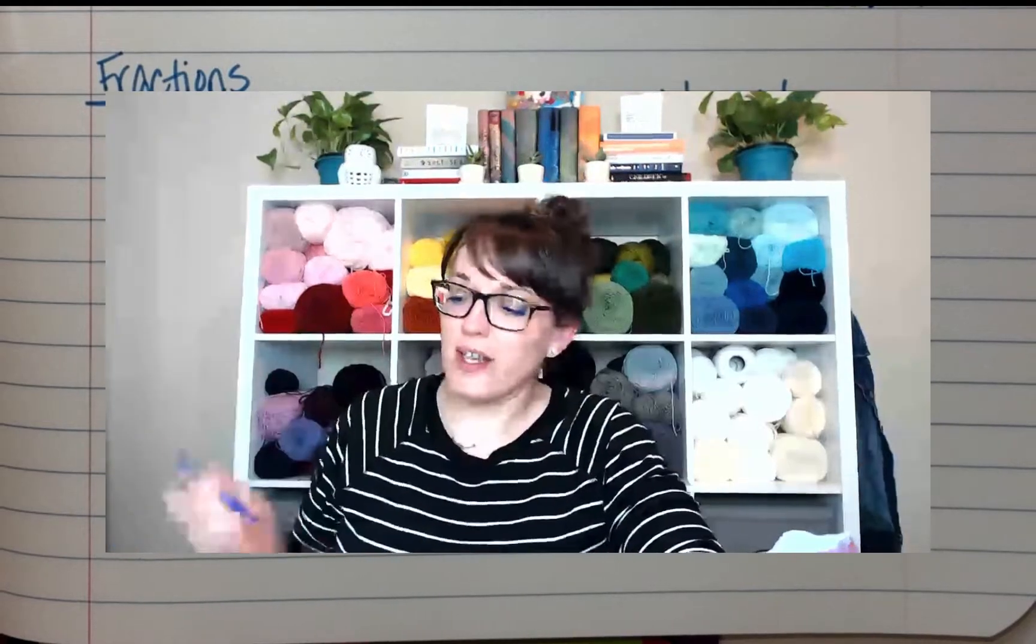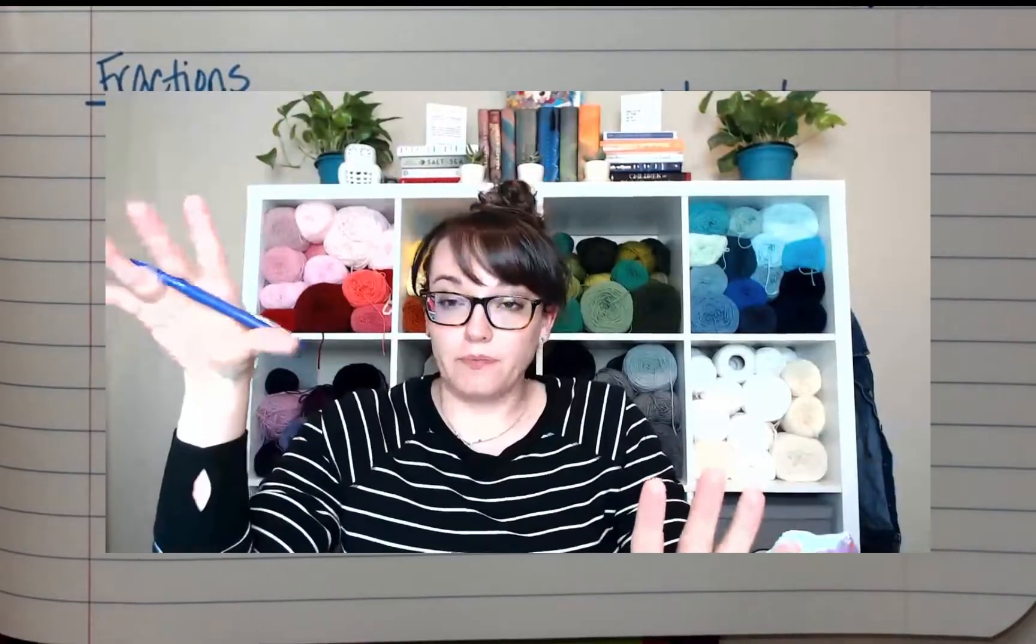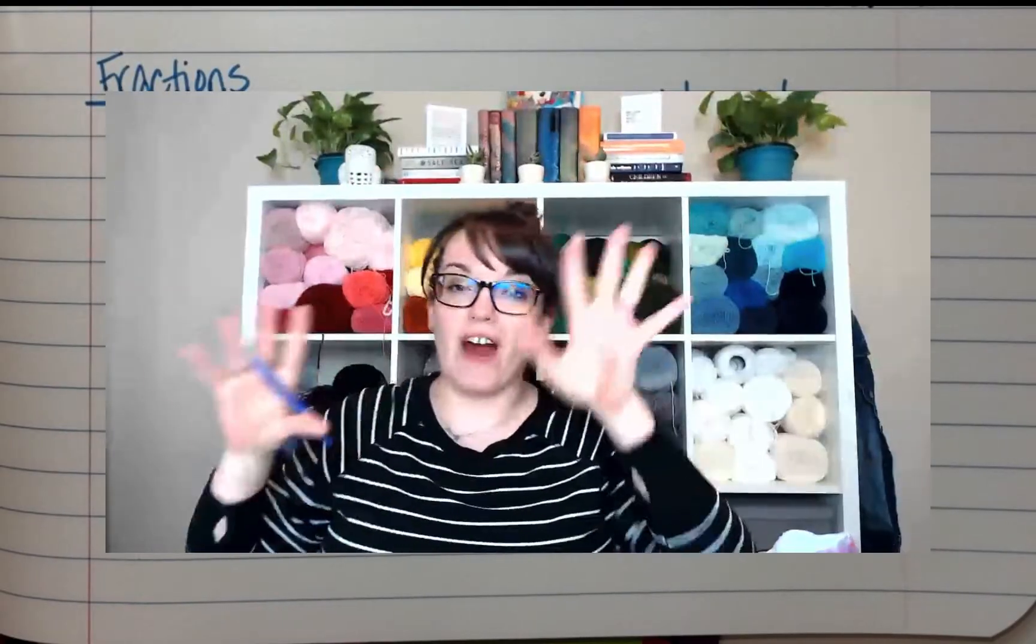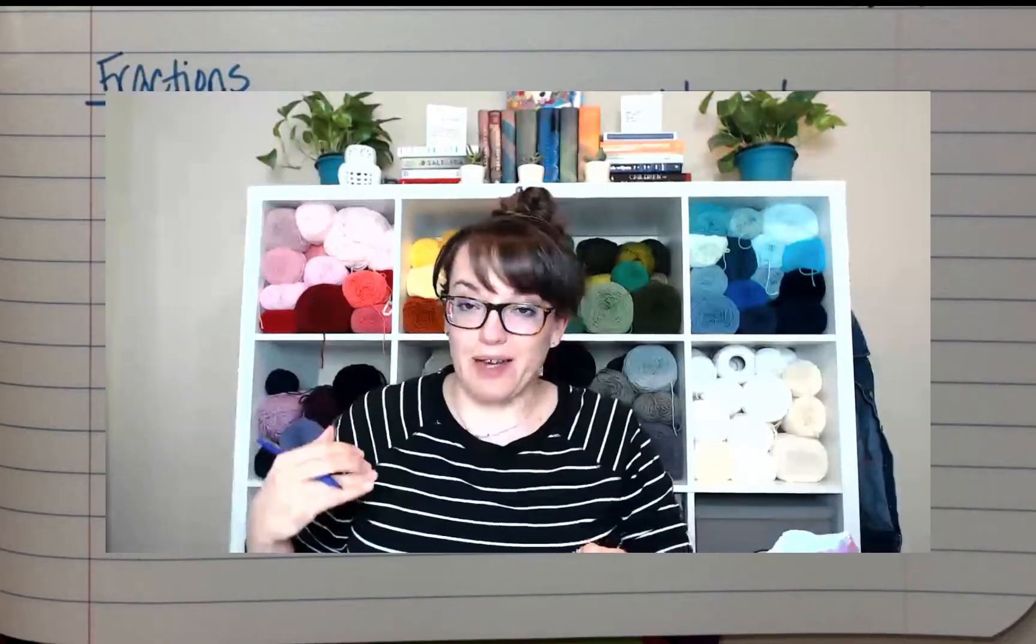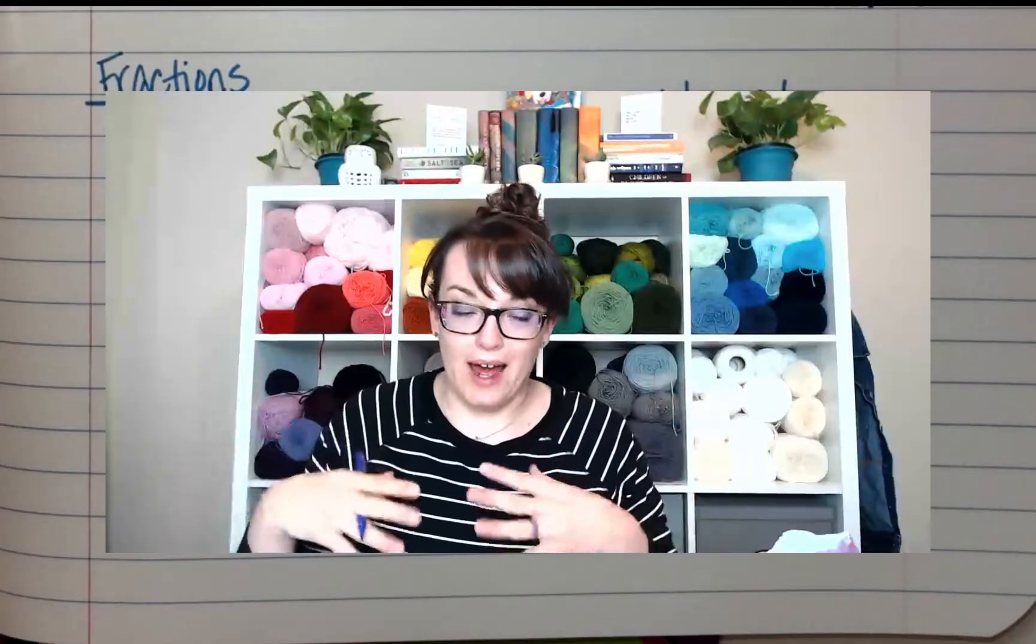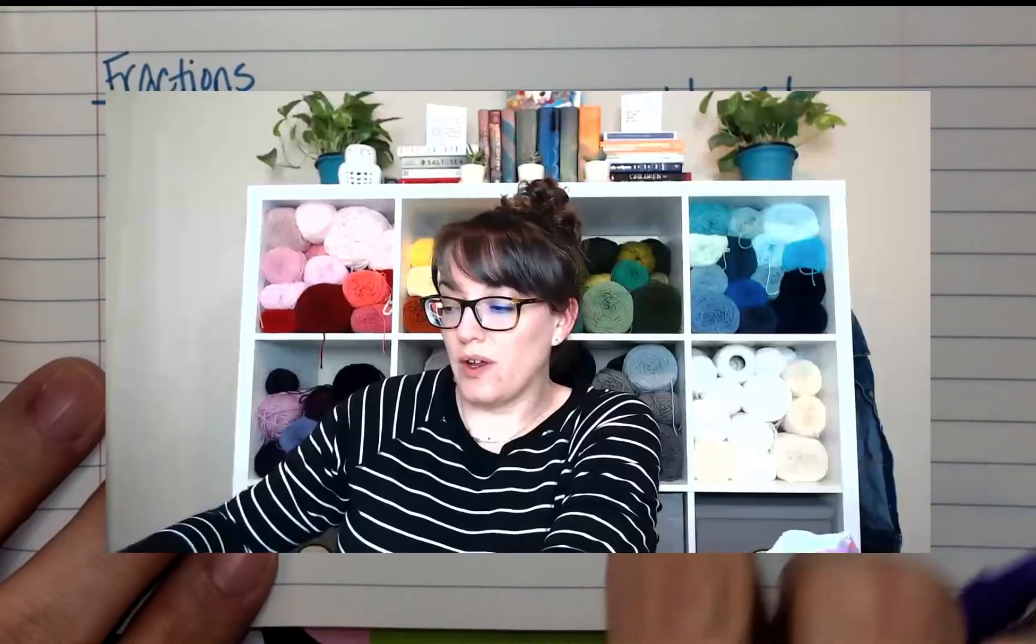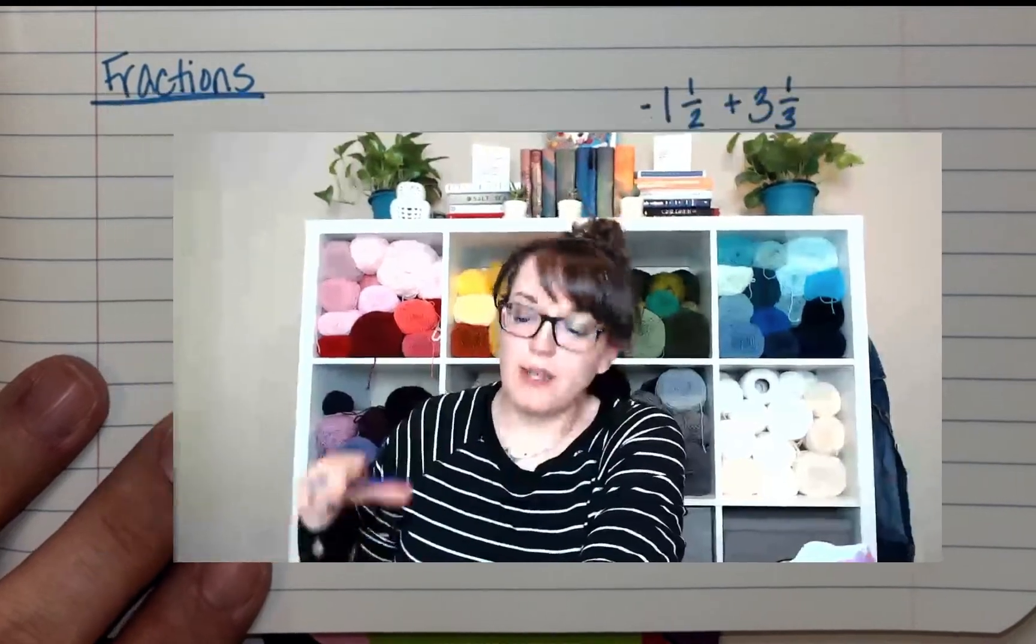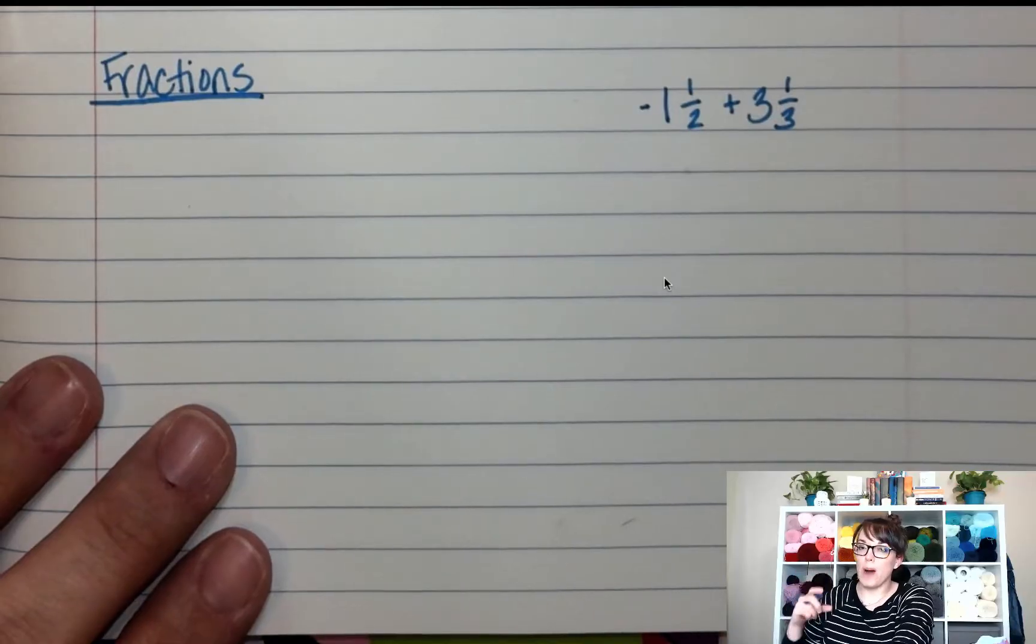All right. So now let's talk about fractions. None of the rules you've learned before go away. So you still have to have a common denominator. We still have to follow the rules when we make the fractions improper. And the same rules from integers apply. So we're going to take the sign of the bigger number. If they have the same sign, we're going to add them. If we have different signs, we're going to subtract them. So for these two, the first thing I'm going to suggest, because it works every time, make all your mixed numbers improper fractions.